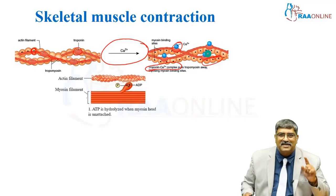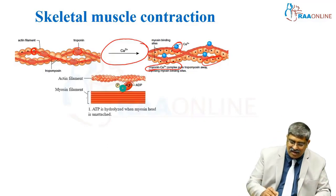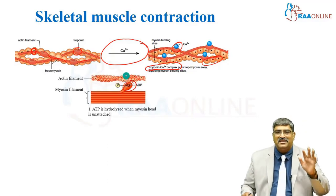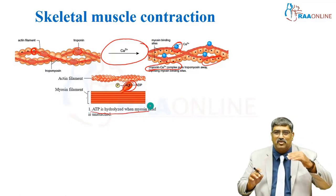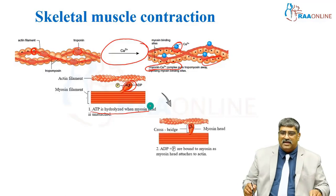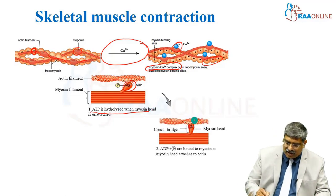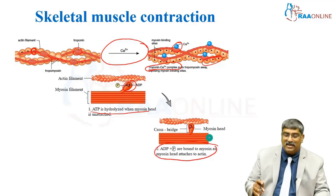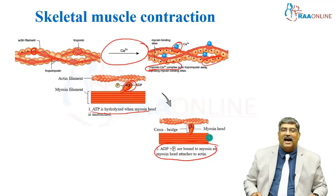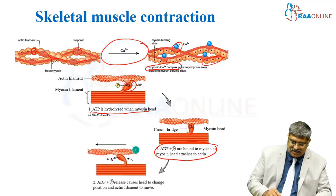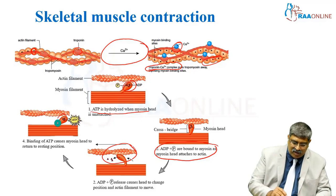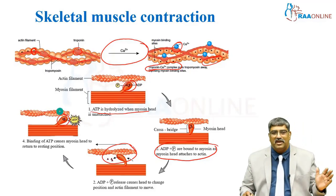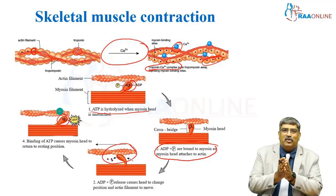Once the myosin binding sites are exposed, the myosin head engages. The first step is that ATP is hydrolyzed when the myosin head is unattached to the actin. Then the myosin binding site is exposed and the myosin head attaches to the actin. As it attaches, contraction happens, and finally the myosin head returns to its normal position when ATP binds to myosin.